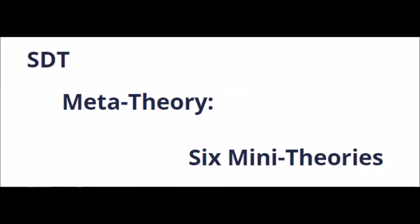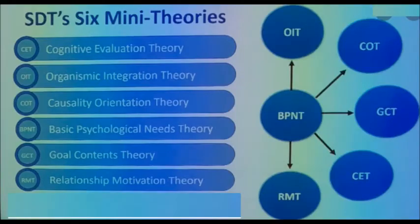Now I will tell you those mini-theories. Self-determination theory is based on six: number one, cognitive evaluation theory; number two, organismic integration theory; number three, causality orientation theory; number four, basic psychological needs theory; number five, goal contents theory; number six, relationship motivation theory.